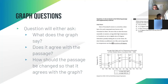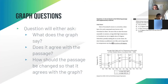For graph questions in the writing section, there are three main things asked: what does the graph say (just reading it), does it agree with the passage, and how should the passage be changed to agree with the graph. For example, 'which choice most accurately represents the information in the graph?' means you change the passage text so that both the data in the graph and the passage make sense together.